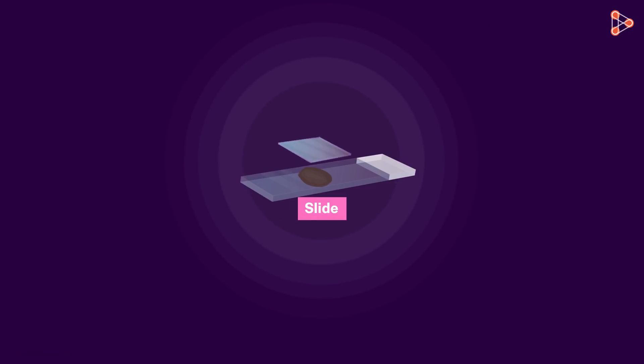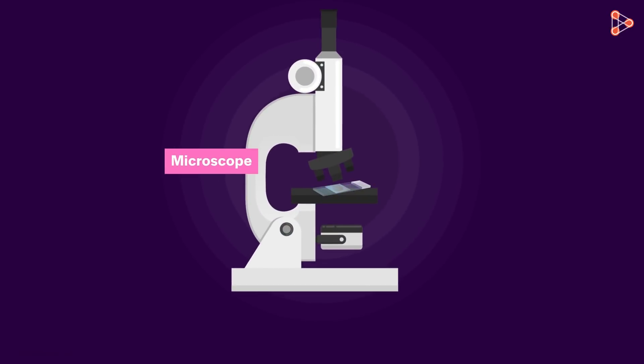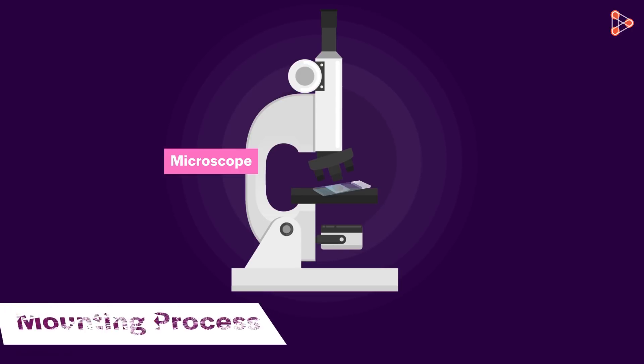Now we place a cover slip in this manner and make sure that no air bubbles are formed on the slide. With this, our slide is ready. This entire process of setting up the microscope along with the slide is termed mounting.